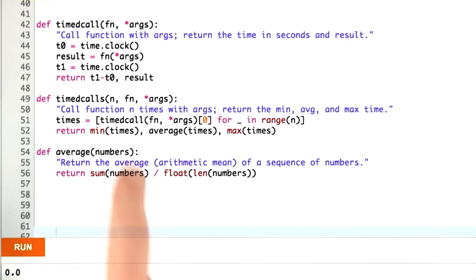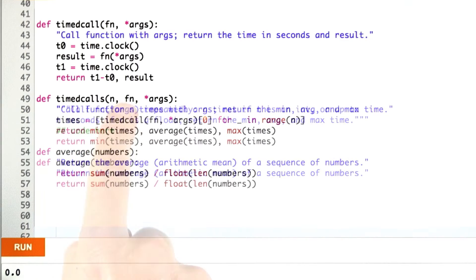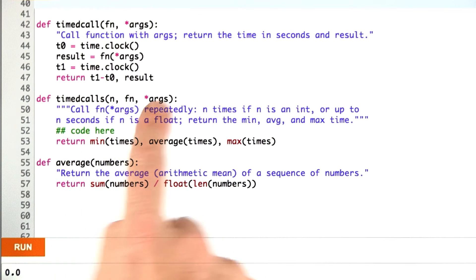I'm going to propose a different version of timed calls. This version has the same signature with three inputs and returns the min, average, and max. But this time it treats n two different ways. What we're going to do is say if n is an integer, then do the same thing we did before.